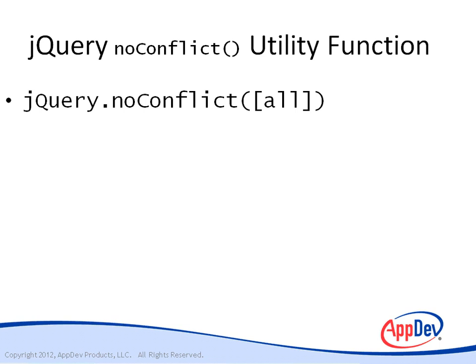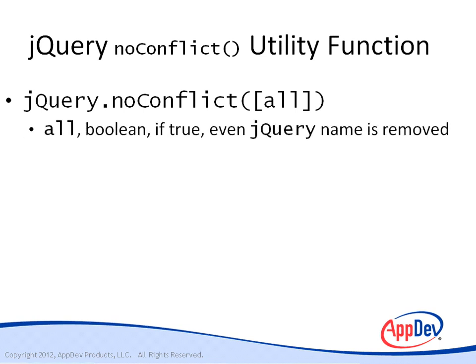The noConflict method can be called using either the jQuery or dollar sign prefix, and it reverts the definition of the dollar sign name to whatever it was when jQuery was loaded. It has one optional parameter — if passed the value true, it will cause even the jQuery name to be removed from the global namespace. Of course, once you do that you can't use jQuery on the page anymore.